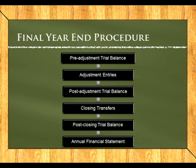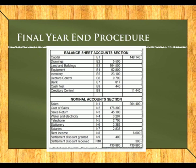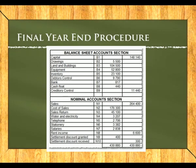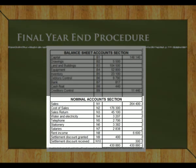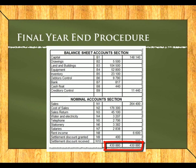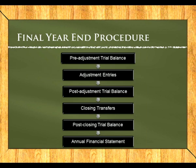At year end, the procedures start with preparing a pre-adjustment trial balance — this is after we've balanced off all our general ledger accounts. The trial balance has a balance sheet section with assets, liabilities, and owners equity accounts, and a nominal section with all income and expense accounts. Both sides must balance to confirm the double-entry system is correct.